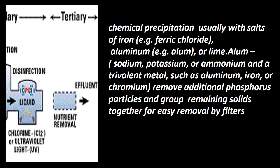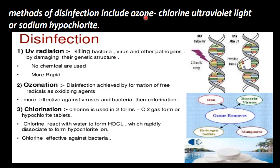In the tertiary treatment, after chemical precipitation, the effluent is to be disinfected. For that, we can use chlorine, ultraviolet rays, or ozone O3, in gas form or liquid form, or sodium hypochlorite. UV radiation kills bacteria, viruses, and other pathogens by damaging their genetic structure. No chemicals are used and it is more rapid. Ozonization achieves disinfection by formation of free radicals as oxidizing agents, and is more effective against viruses and bacteria than chlorination.